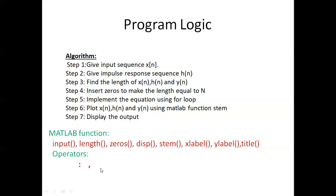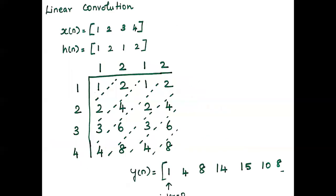Now we will see how to compute linear convolution by taking a few examples. We calculate the length of X and the length of H — here both lengths are 4. The length of Y(n) is LX plus LH minus 1, so 4 plus 4 minus 1 equals 7. Using a tabular method, we write the values of X(n) in vertical order: 1, 2, 3, 4.